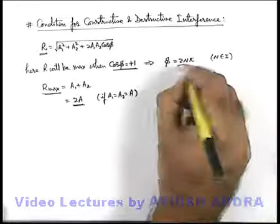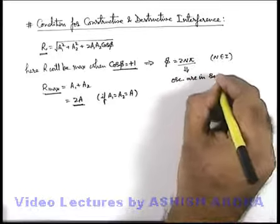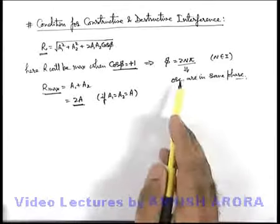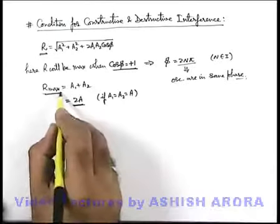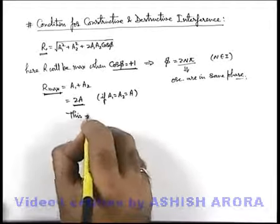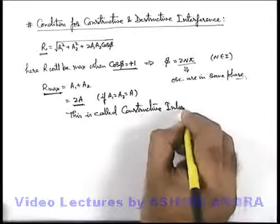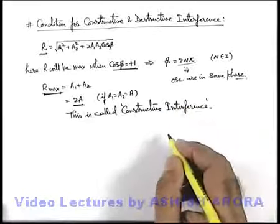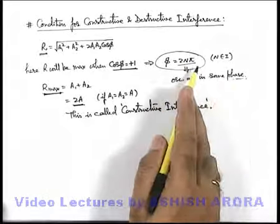When the phase difference is 2nπ, the oscillations are in the same phase. So we can say when two waves superpose at a medium particle exactly in the same phase, the resulting amplitude of oscillation after superposition will be maximum. This is called constructive interference. The basic condition for constructive interference is that the waves superpose in the same phase, or the phase difference is 2nπ.